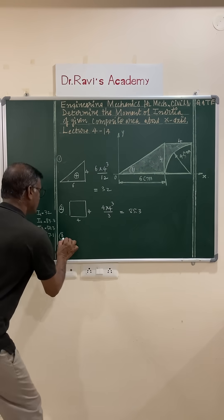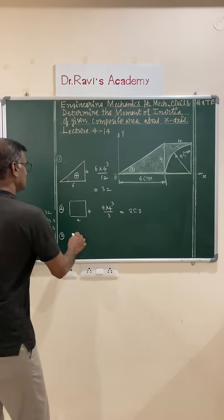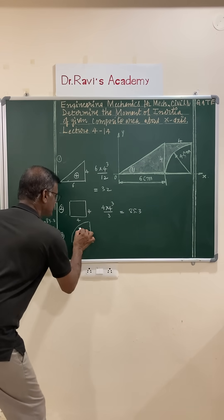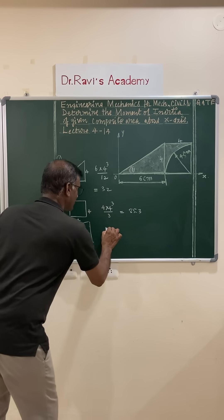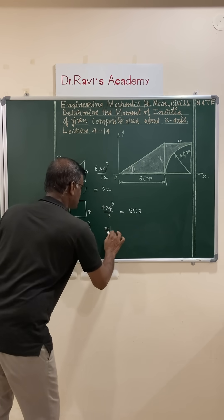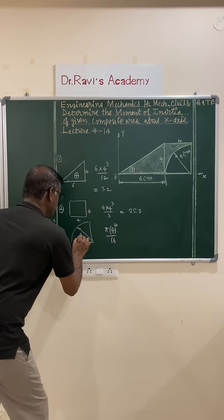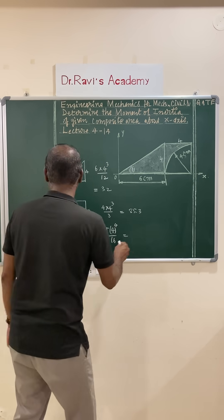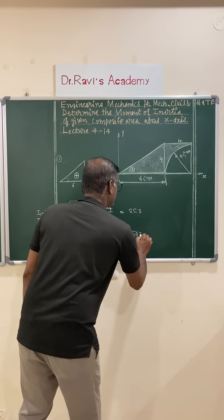And lastly, wide space that is empty space and it is, the formula is, the radius is 4. It is pi r to the power 4, that is 4 to the power 4 by 16 and this is empty space minus, this is plus. And this value is 50.3.